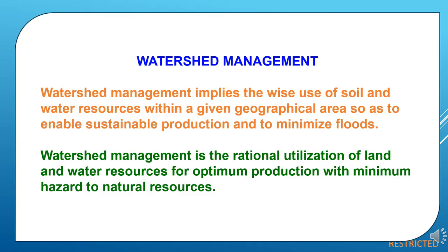Watershed management implies the wise use of soil and water resources within a given geographical area so as to enable sustainable production and to minimize floods. Watershed management is the rational utilization of land and water resources for optimum production with minimum hazard to natural resources.